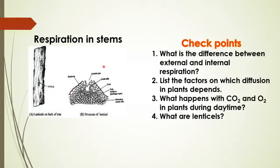In this module, we have seen how plants respire even though they don't have any well-defined respiratory system. Each and every part of the plant body needs energy, which comes from the breakdown of food, and for that there is a need for oxygen. This is how roots, stems, and leaves of the plant respire.